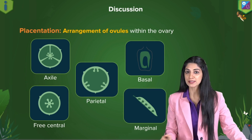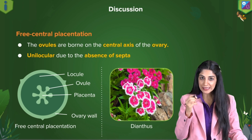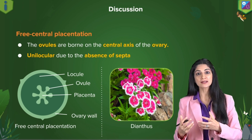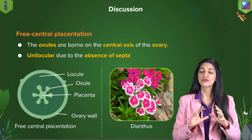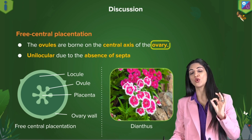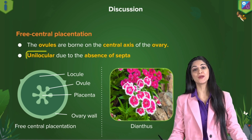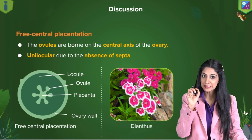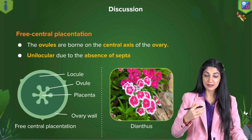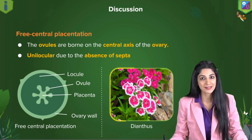The question is asking about free central placentation. As the name suggests, the ovules are born freely in the centre of the ovary, and this ovary is unilocular — there are no septa, there is a single chamber. The classic example of free central placentation is Dianthus.